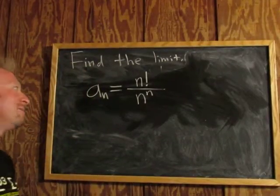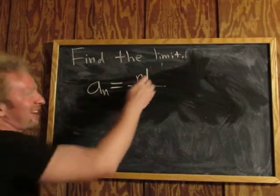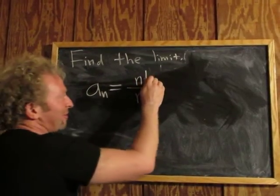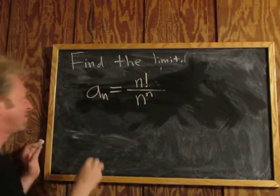In this video we're going to find a limit. This one's a little bit harder — it has an n factorial in the numerator and an n to the n in the denominator.